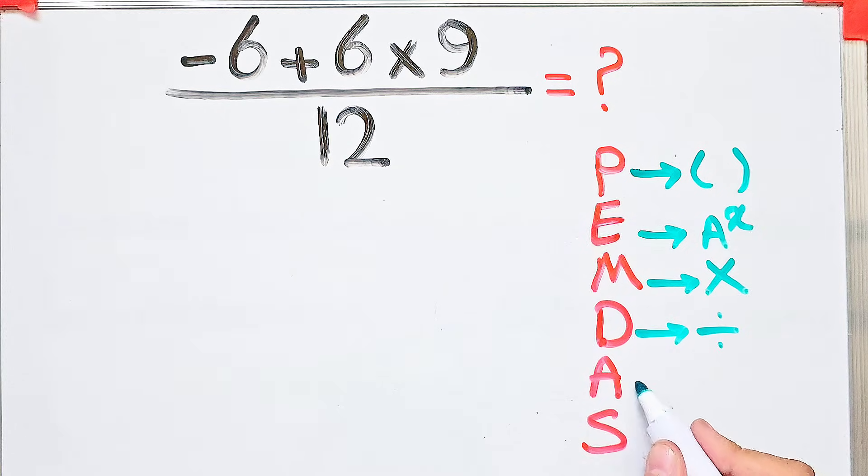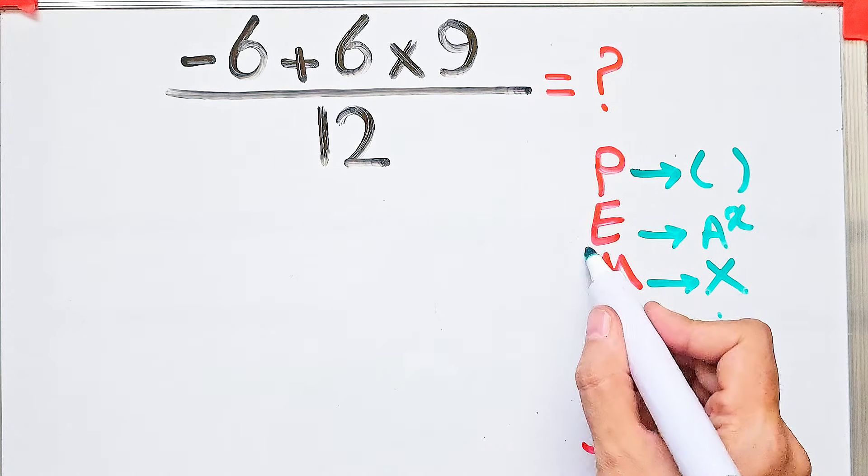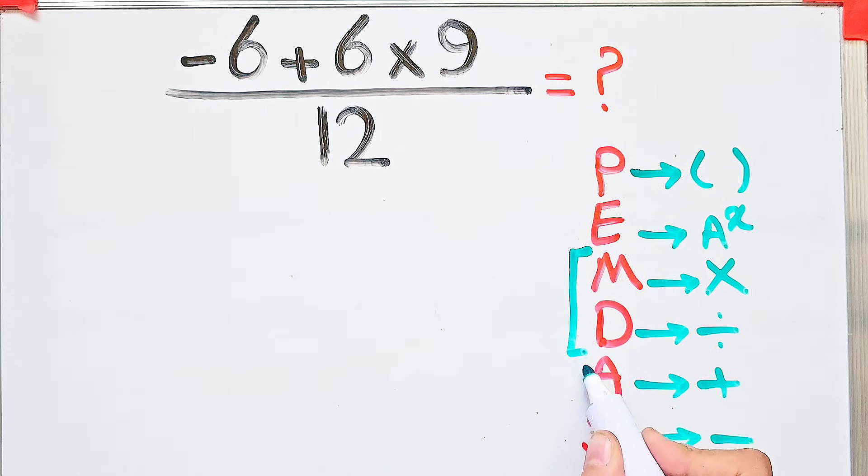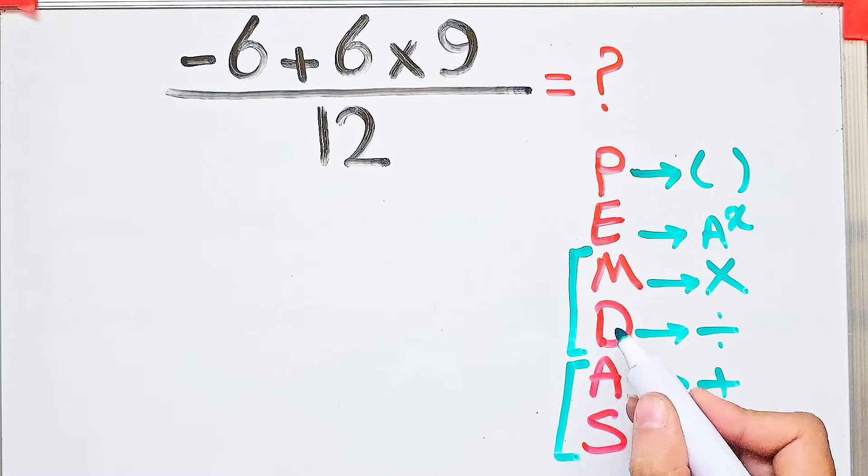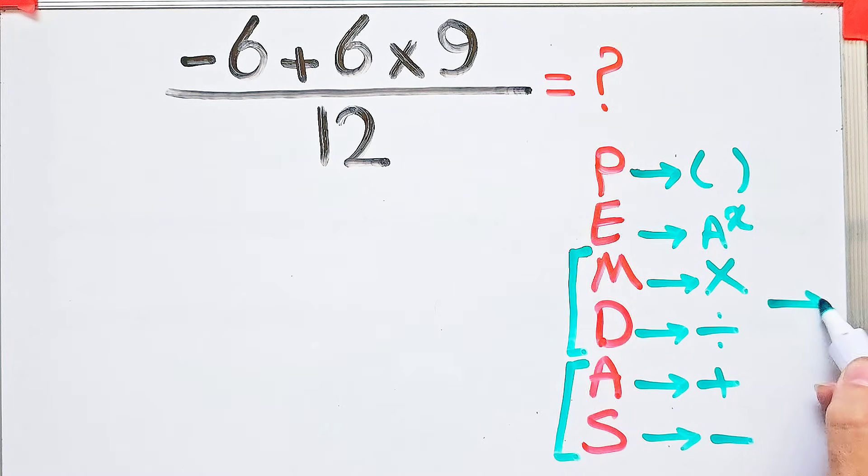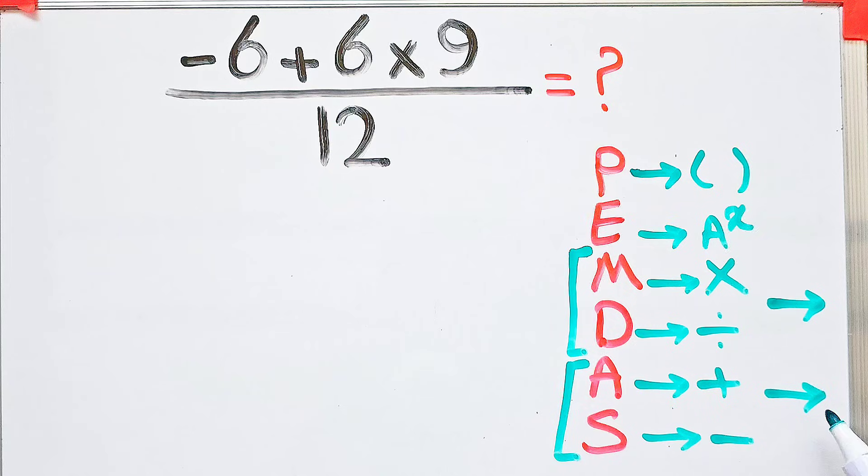A stands for addition, and S stands for subtraction. Remember that multiplication and division have the same level of priority. Also, addition and subtraction have the same priority. When we have both in an expression, we start from the left and simplify the question.